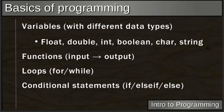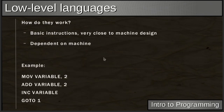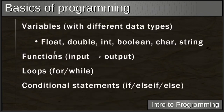Loops allow you to cycle back and perform the same operations again and again. There are typically two types of loops: for and while. We'll go into those later. There are also conditional statements.